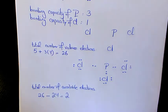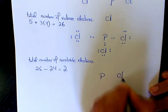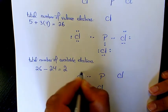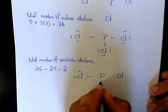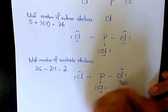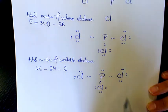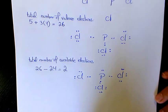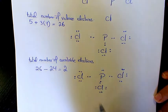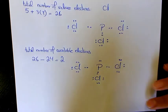The next step is to place the remaining electrons on the central atom in pairs. So I'll draw it again step by step — we had the structure like that, and now we put the extra two electrons on phosphorus as a lone pair. Now we check the octet rule: chlorine has eight electrons each, and phosphorus has eight as well — so all atoms satisfy the octet rule.